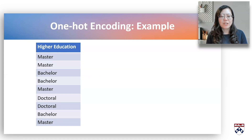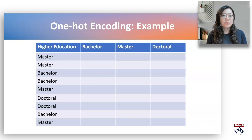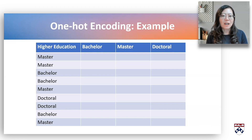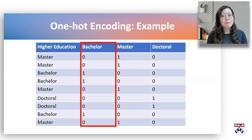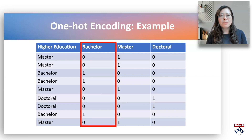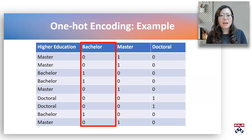This variable has three categories: bachelor, master, and doctoral. So three columns will be created. In each column, only one category is hot, set to 1, and all the other categories are coded, set to 0. For example, in the bachelor column, a value of 1 is assigned to participants with the highest degree of bachelors, while participants with the highest educational level of masters or doctorals are assigned a value of 0. The same logic applies to the master and doctoral columns.